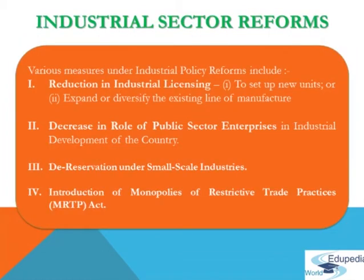The first reform is industrial sector reforms. To make necessary reforms in the industrial sector, the government introduced its new industrial policy on July 24, 1991. The various measures under industrial policy reforms include reduction in industrial licensing. The new policy abolished industrial licensing for all projects except for a short list of industries like liquor, defense equipment, industrial explosives, etc. No licenses were needed to set up new units or expand or diversify the existing line of manufacture.